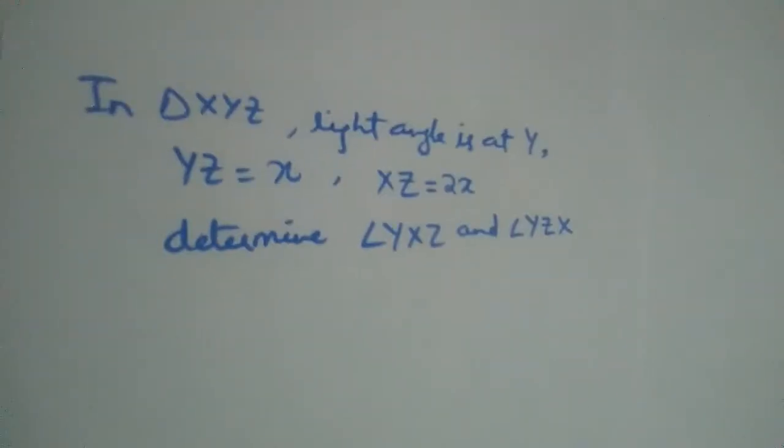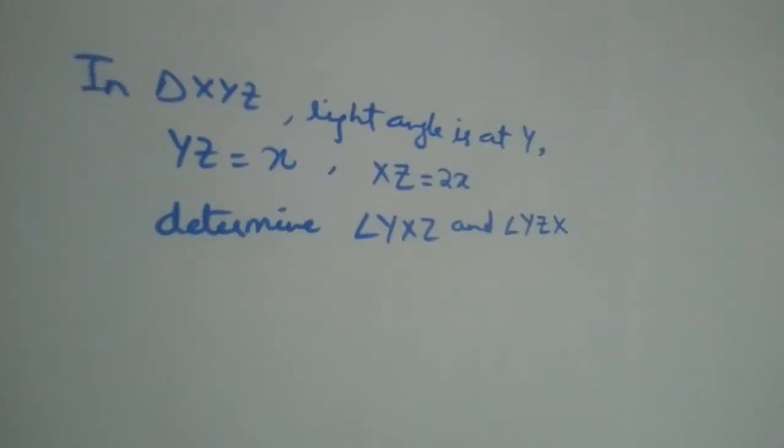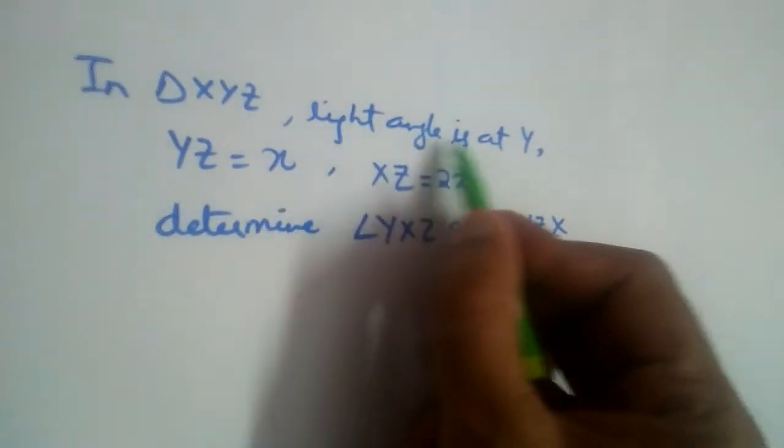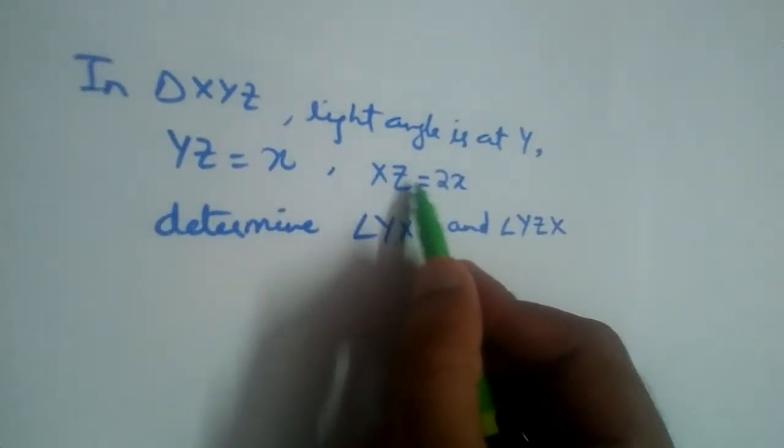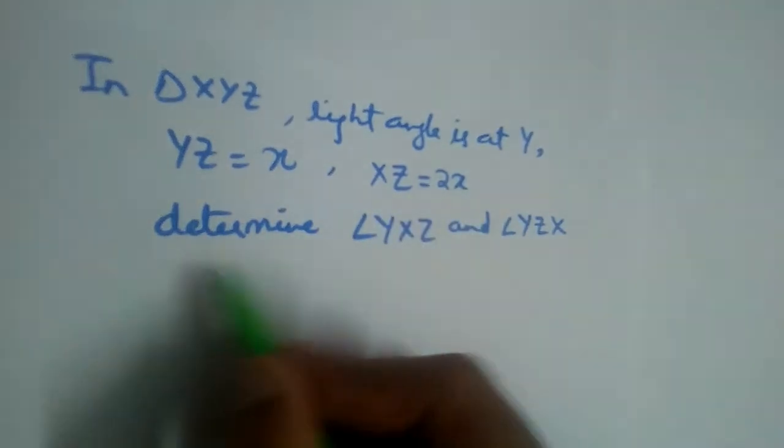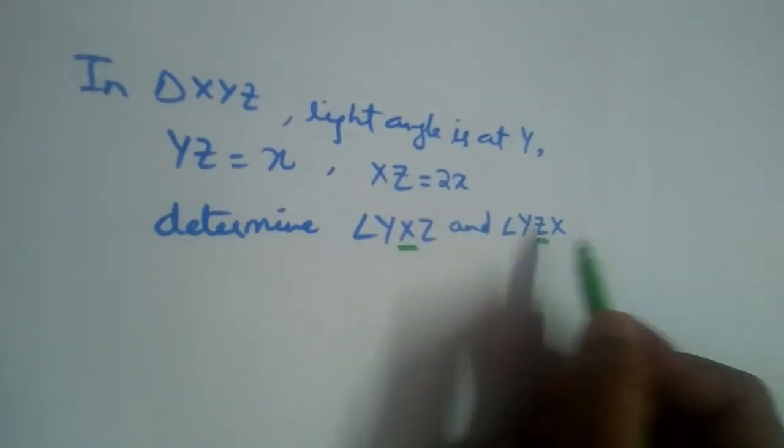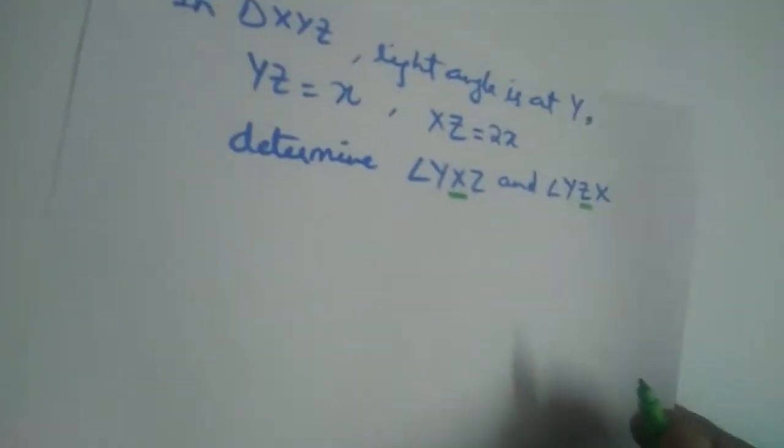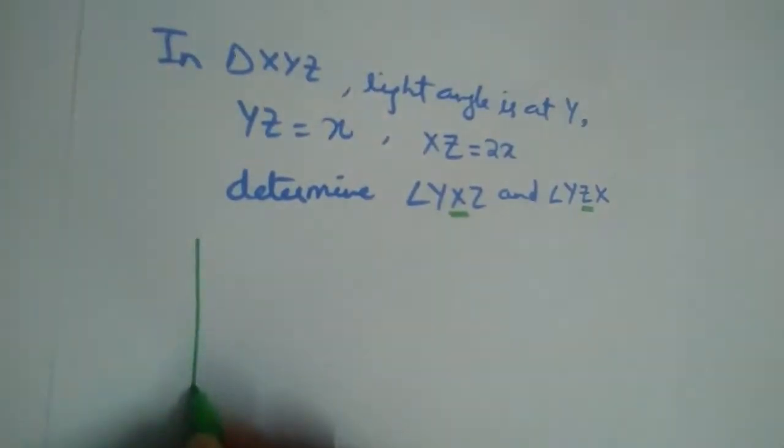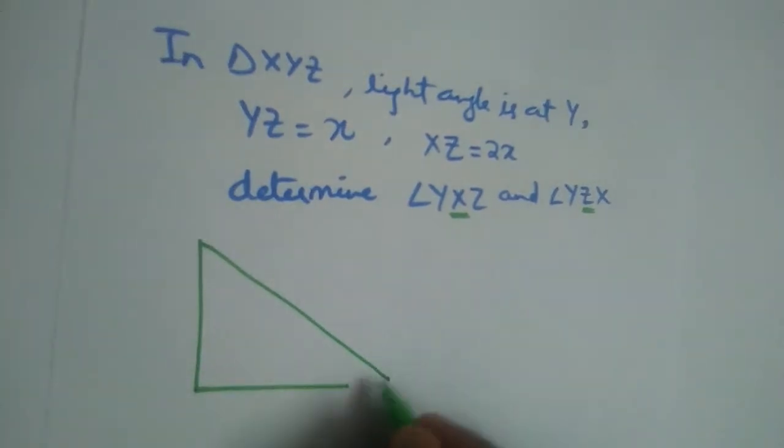Let us solve this problem. In a triangle XYZ, right angle is at Y, YZ is equal to x, and XZ is equal to 2x. Determine angle X and angle Z. Okay, let us draw the triangle.